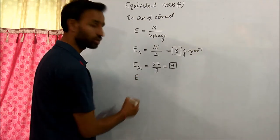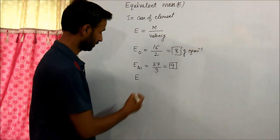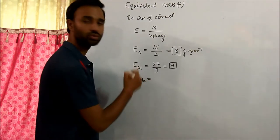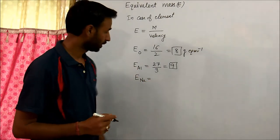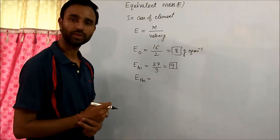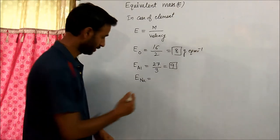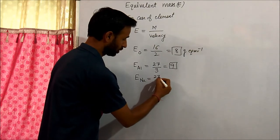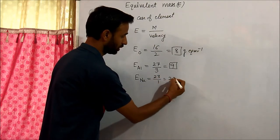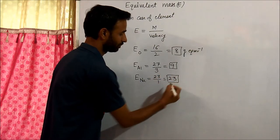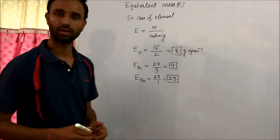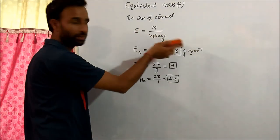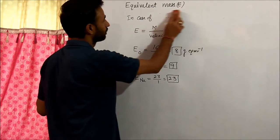Equivalent mass of sodium: the molar mass of sodium is 23, and the valency of sodium is 1. So, 23 divided by 1 equals 23. That covers equivalent mass for elements.